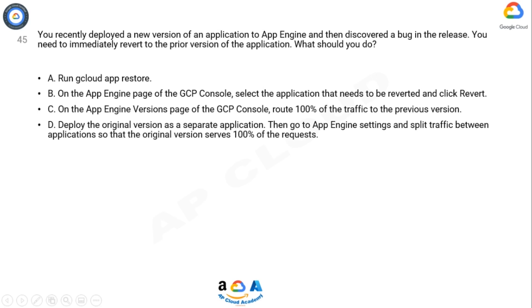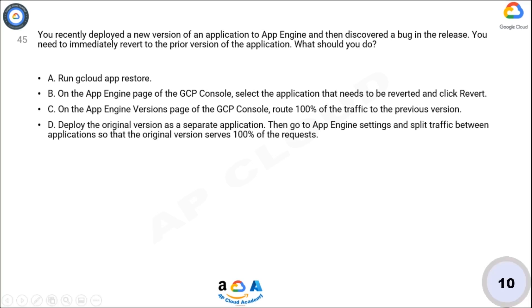D. Deploy the original version as a separate application, then go to App Engine settings and split traffic between applications so that the original version serves 100% of the requests. Now think 10 seconds for the answer.